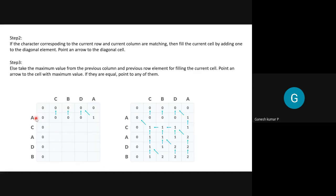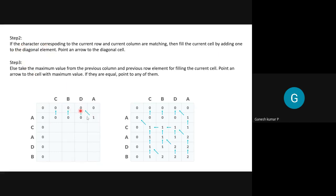We have two cases. Case one: if the characters corresponding to the current row and current column are matching — for example, A and A — we fill the current cell by adding 1 to the diagonal element. So in this case it is 1 + 0 = 1, which is written in that cell. The arrow is drawn diagonally.